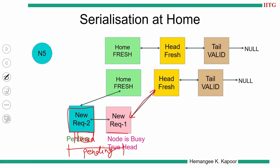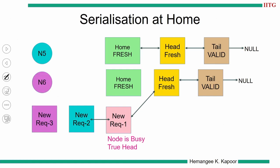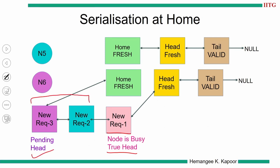Overall, we service requests in the order in which they reach the home node. If the pink node is currently the true head but has not finished its work, all new nodes entering will join the pending list. The order of service in this example is: node 1, 2, 3, 4, 5 — this is the order of serialization, done at the home node.